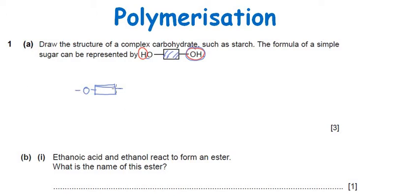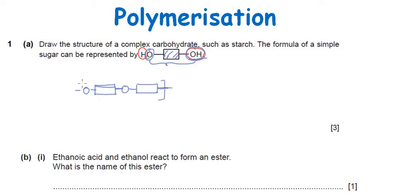We draw an extended bond on both sides and then join the next monomer the same way. The O comes here, then the general group again, and an extended bond on the other side where we removed OH. This is how we get a polymer of a carbohydrate such as starch, with N such molecules indicated.